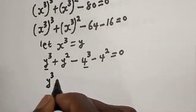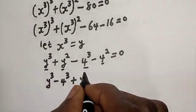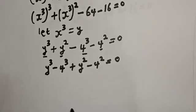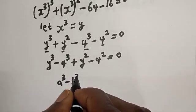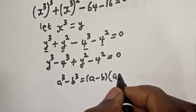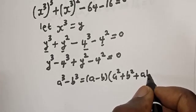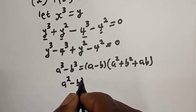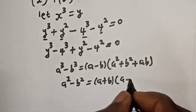We have y³ minus 4³ plus y² minus 4² equals 0. Take note of these rules: a³ minus b³ equals (a minus b)(a² plus b² plus ab), and a² minus b² equals (a plus b)(a minus b).